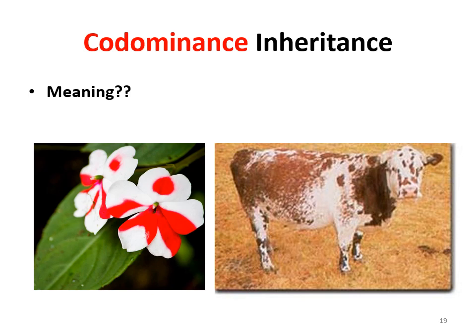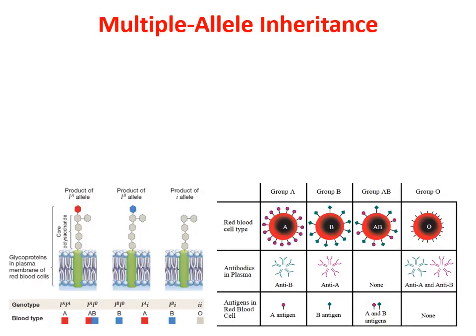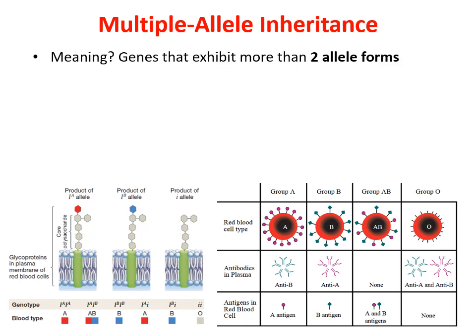If I say red and blue making purple, you should be able to tell me that's an example of incomplete dominance. Whereas red and blue having speckled spotted flowers would be codominance. If you have any questions, please contact me in the Remind app.